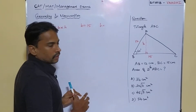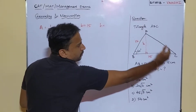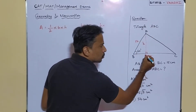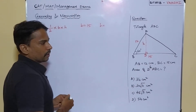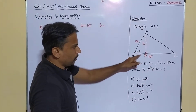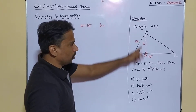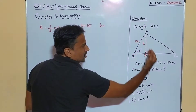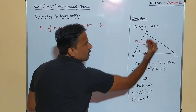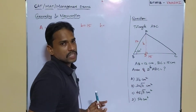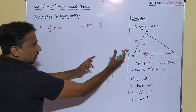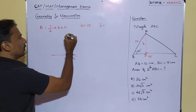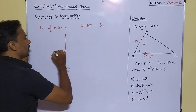To find the missing height, I will drop a perpendicular from A to BC and name the point where it meets BC as point D. Now we will consider the left-hand side portion of the triangle — triangle ABD. Let me redraw triangle ABD separately.